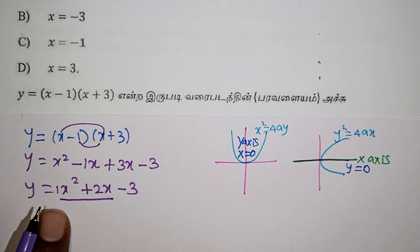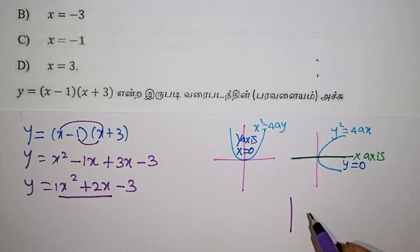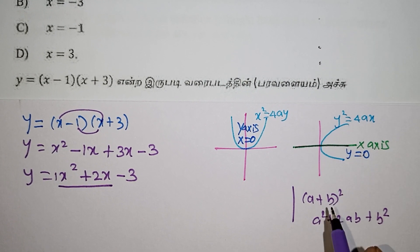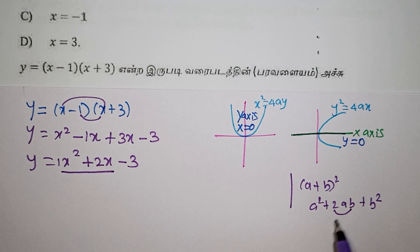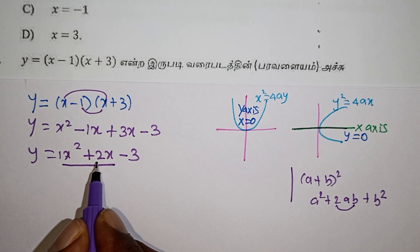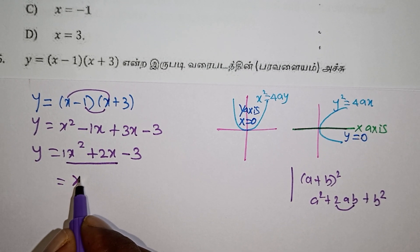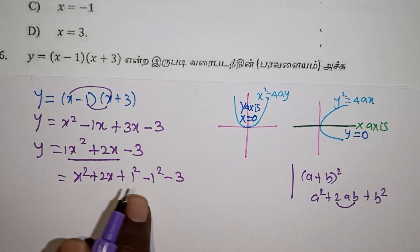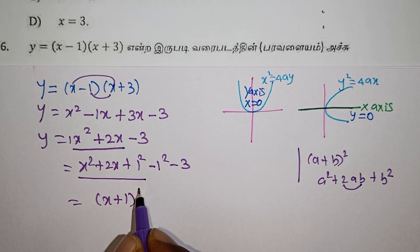Now, x squared coefficient is 1. This is the 2x of b. We use a plus b whole squared: a squared plus 2ab plus b squared. Now with b, divide by 2 — b value is 1. What we do is: add 1 squared and subtract 1 squared. These three terms form x plus 1 whole squared.